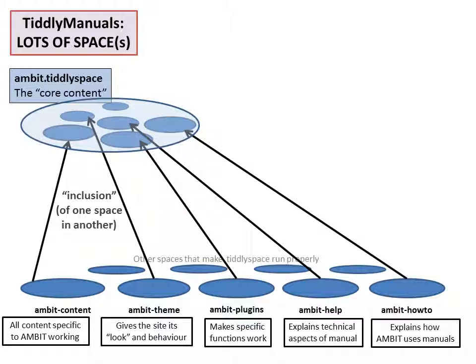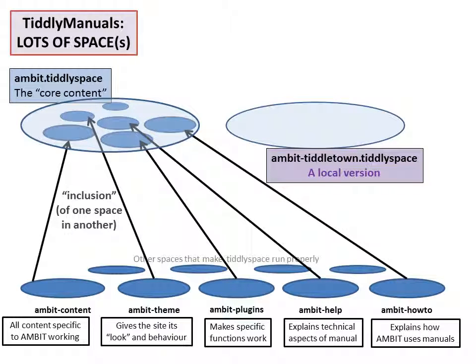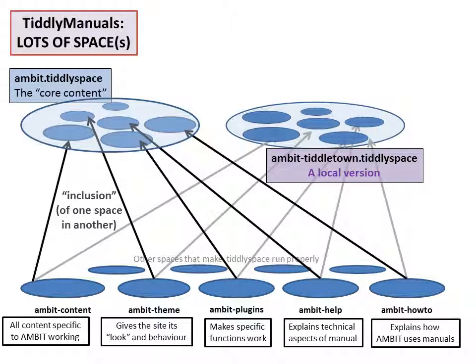That's how we make our website. You don't need to see all the ones running along the bottom of this page — they're hidden away, and all you get is what you see in this one rather seamless-looking website. Say you come along from the Tiddletown team and decide that you want to open your own version of the Ambit manual. What you will do is include exactly the same content as you saw displayed in the Ambit space.